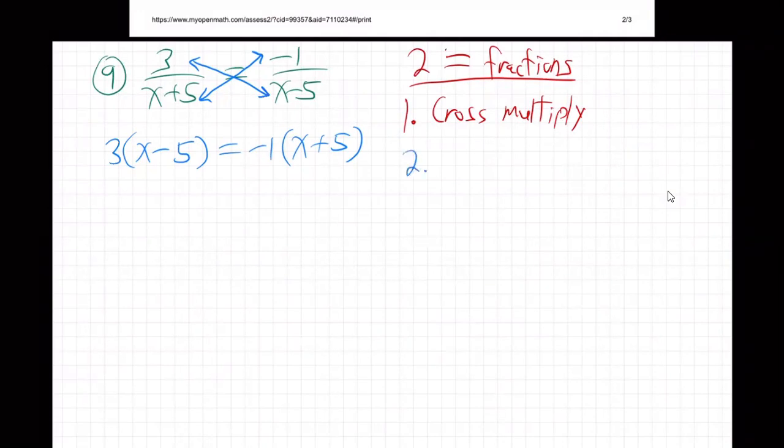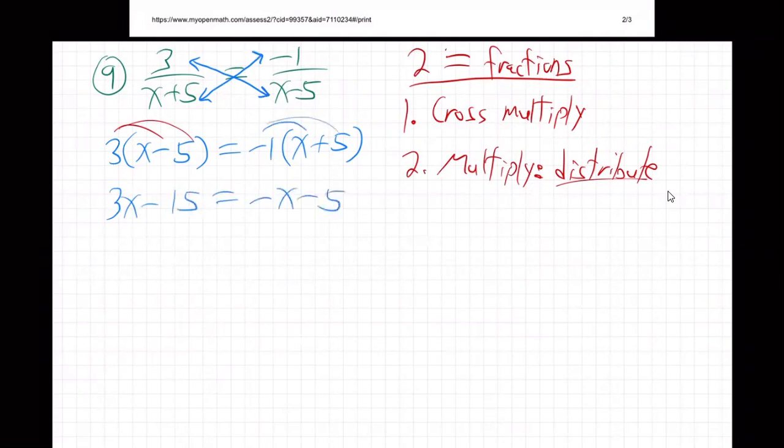And then you just multiply, distribute through the parentheses. So that three will go there and there. So we get three x minus fifteen. This will go here and here, minus x minus five, like so.